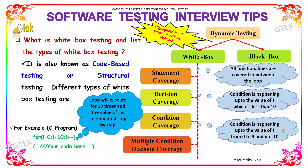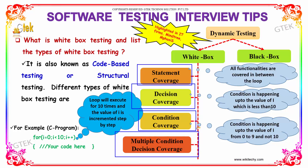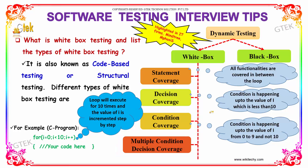The different types of white box testing — also known as code-based or structural testing — includes: Statement coverage, Decision coverage, Condition coverage, and Multiple condition decision coverage. These four types are the four different types of white box testing.